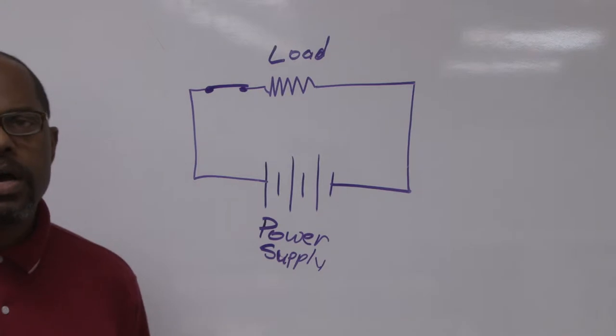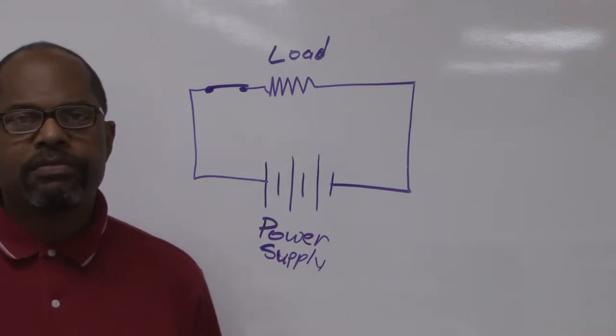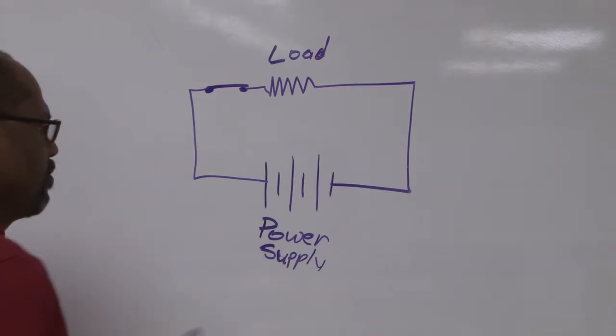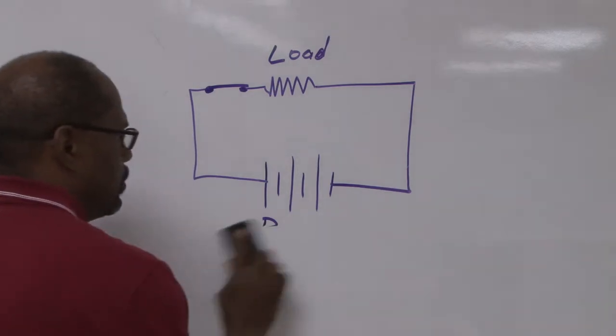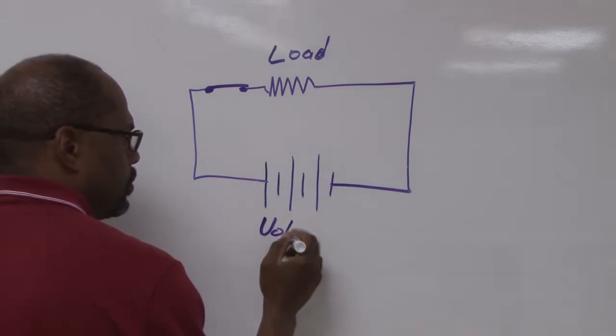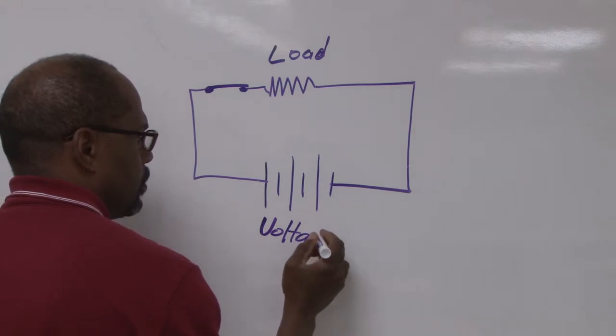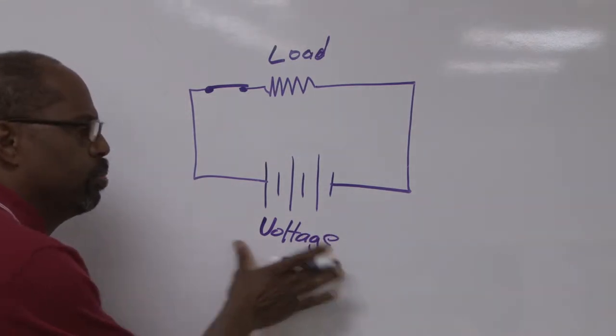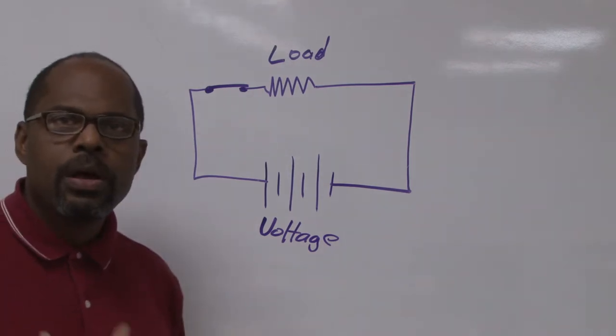So looking at basic electricity and how current flows, this is just a quick review. This will remind you of some of the things that we understand. So voltage is the force to push electrons through the wire.